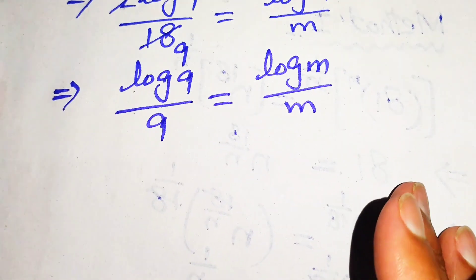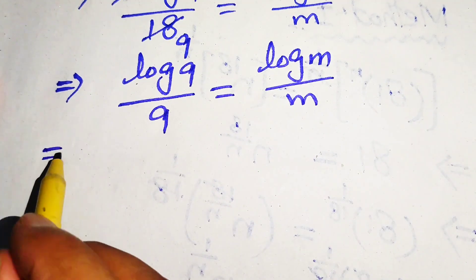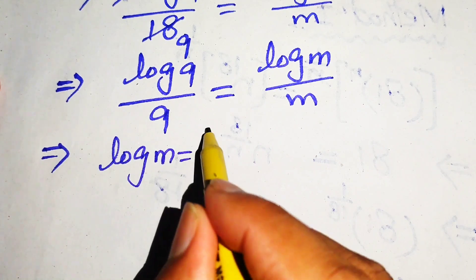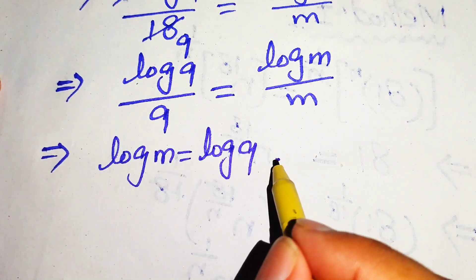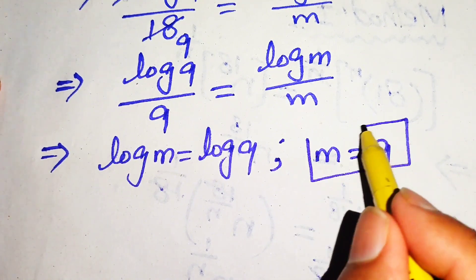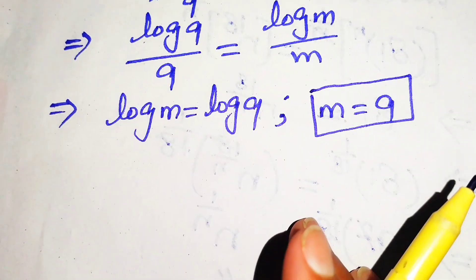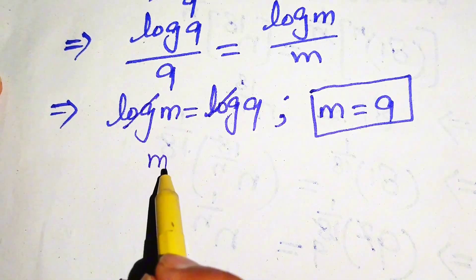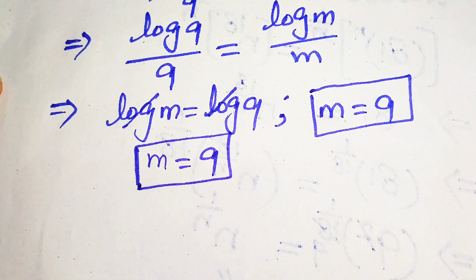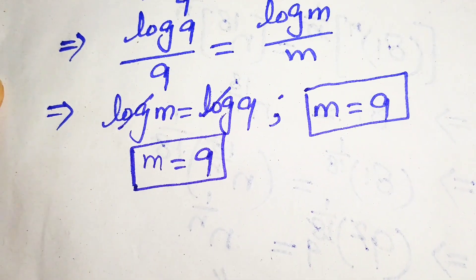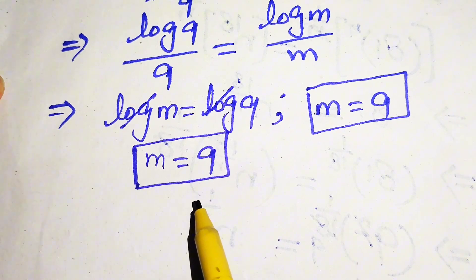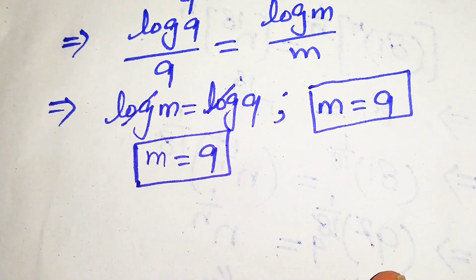Comparing both sides, we see log m equals log 9. Comparing the denominator terms also gives m equals 9. Cancelling the log gives m equals 9. From both methods we get the same value: m equals 9, which is the final answer.